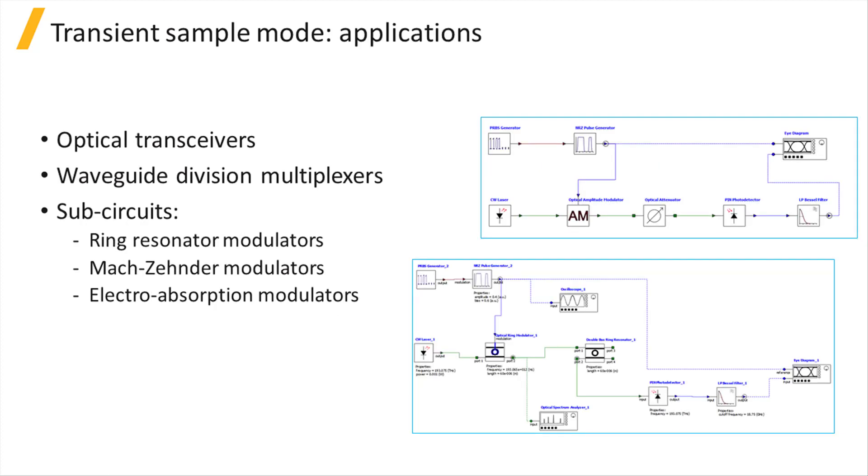Applications of time domain simulations using the transient sample mode include optical transceivers and waveguide division multiplexers, as well as sub-circuits like ring resonator modulators, Mach-Zehnder modulators, and electroabsorption modulators.